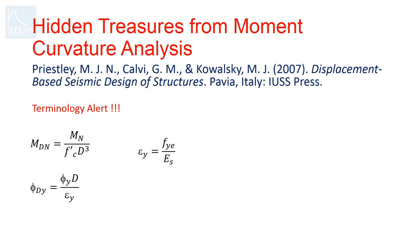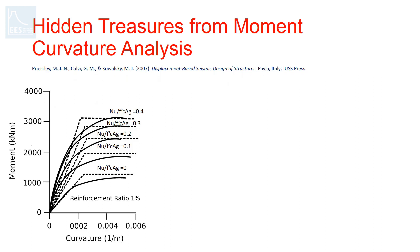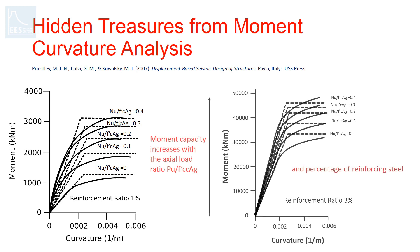In the moment-curvature plot with bilinear idealization, it can be seen that the moment capacity is a function of the axial load ratio and the amount of reinforcing steel. As the axial load ratio increases, the moment capacity also increases, and the same goes for the amount of reinforcing steel. However, notice the yield curvature — there is not much variation.